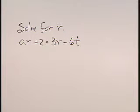Solve for R. A times R plus 2 is equal to 3R minus 6T.